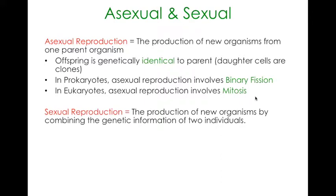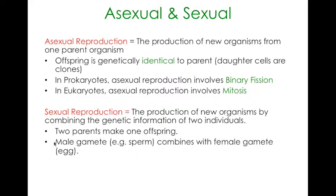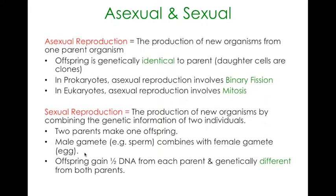Sexual reproduction is the production of new organisms by combining genetic information from two individuals - two parents that produce one offspring. In animals, the male gamete or sperm combines with the female gamete which is the egg. The offspring will gain half its DNA from one parent and half from the other, and is therefore genetically different from both parents - a combination of both.